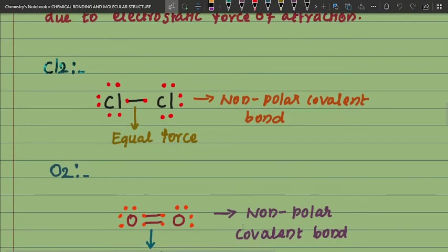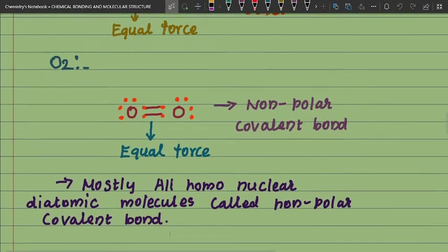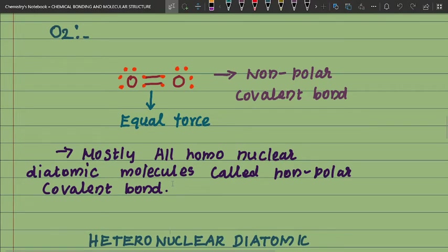See Cl₂ — here both chlorine atoms have equal force at the center point, so this is called a non-polar covalent bond. There is no electron density or polarity. Also in other homonuclear molecules the same applies — equal force, non-polar covalent bond. Mostly all homonuclear diatomic molecules are called non-polar covalent bonds. This is the important point.